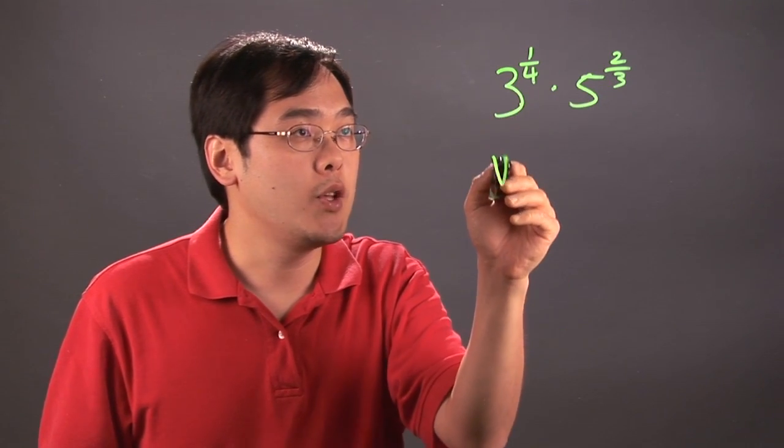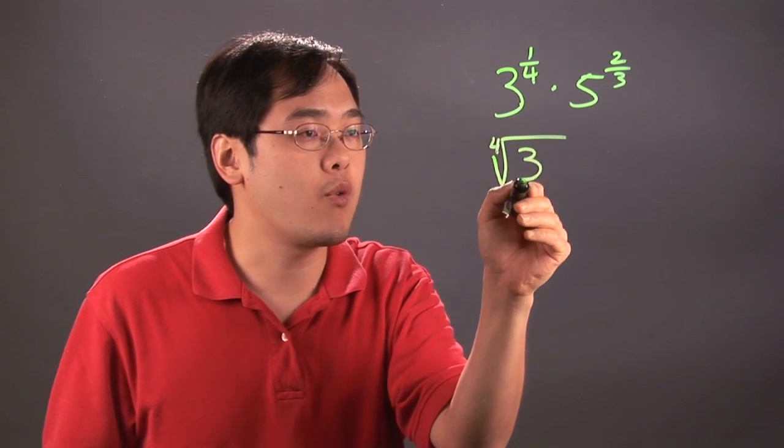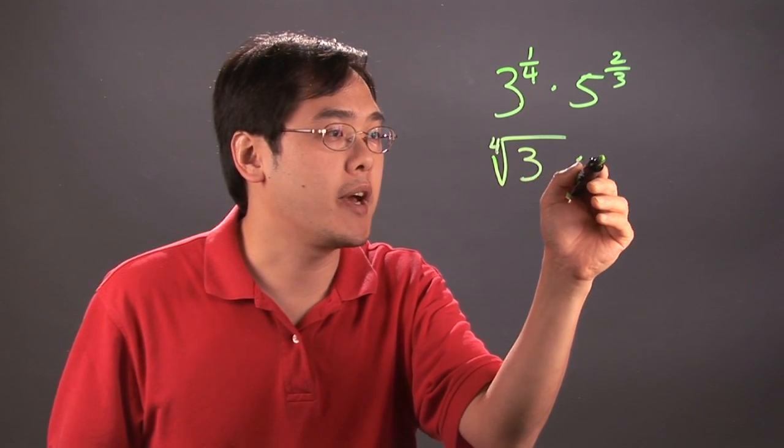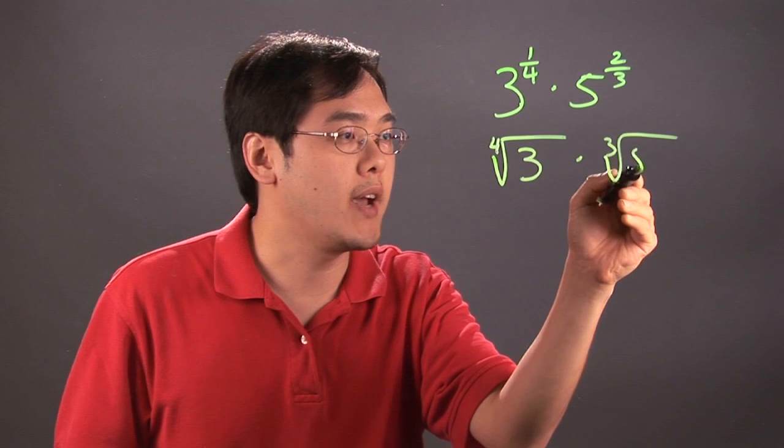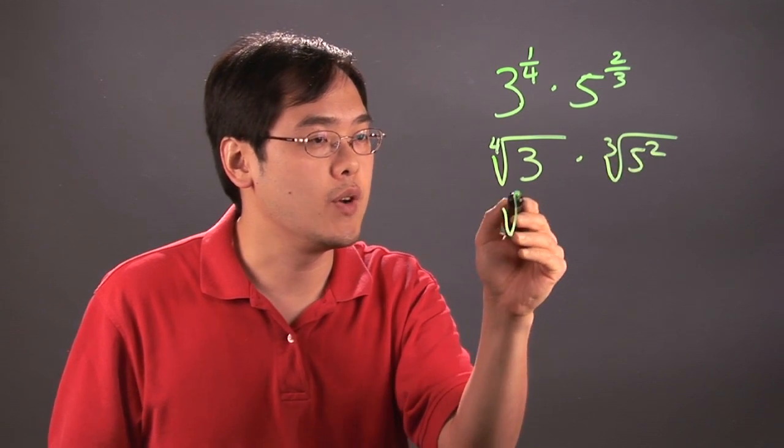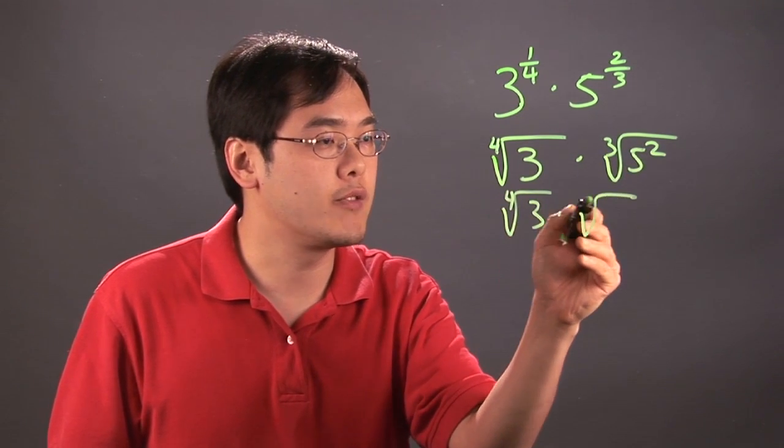Because 3 to the 1/4th is really 4th root of 3, and then you're multiplying it by the cube root of 5 squared, which is 25. So 4th root of 3 times the cube root of 25.